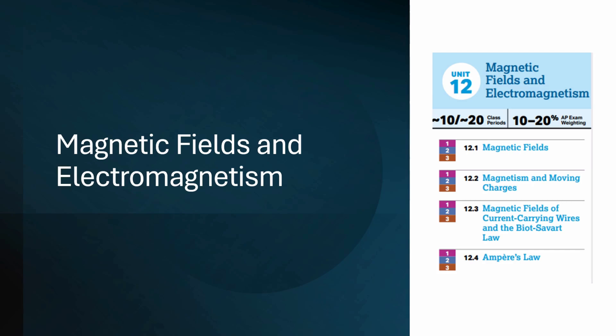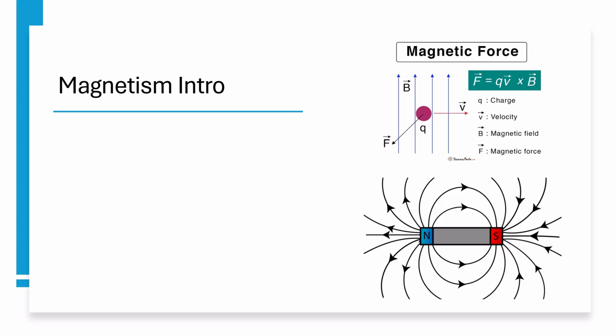All right, let's get straight into it. With electricity we learned that static electric charges create electric fields found by using Coulomb's law. Now with magnetism, moving charges create magnetic fields with a different equation for force.